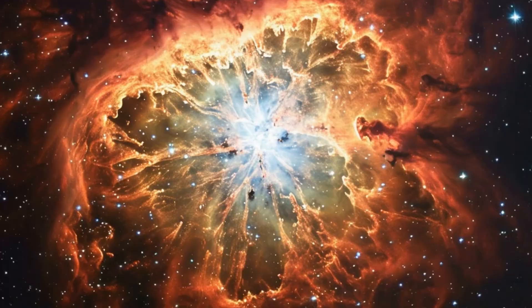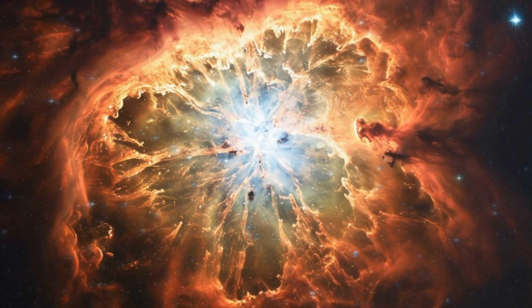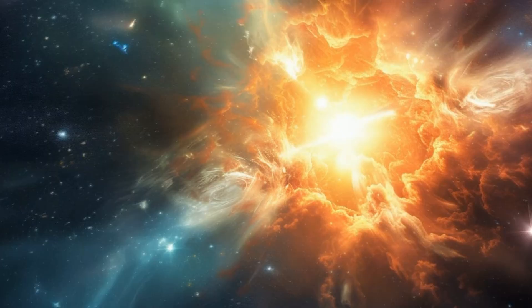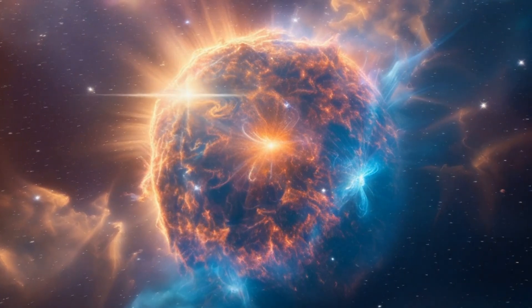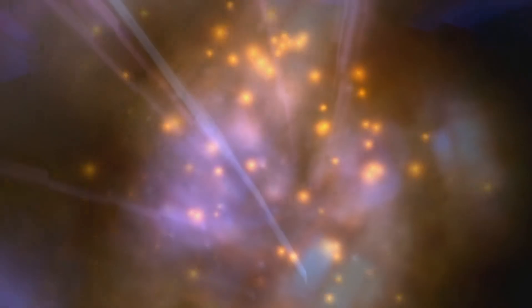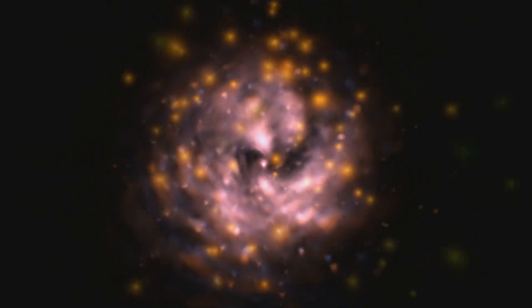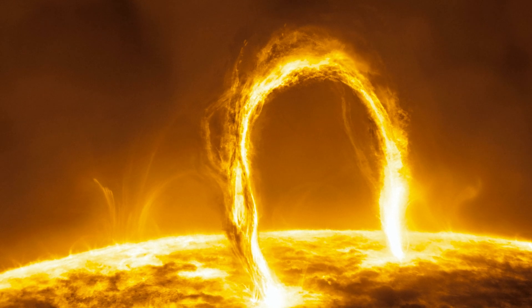According to astronomers, the safest distance from a supernova for human life is 50 light years, making Betelgeuse over 10 times more distant. Instead, everyone on Earth will get a show when a very bright star suddenly appears in the sky.